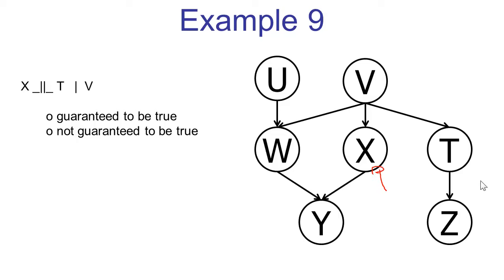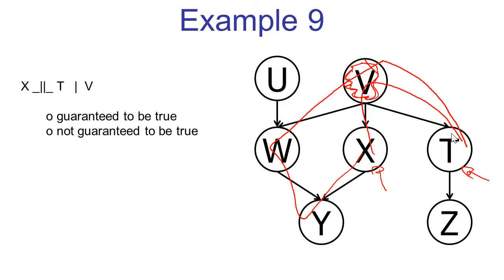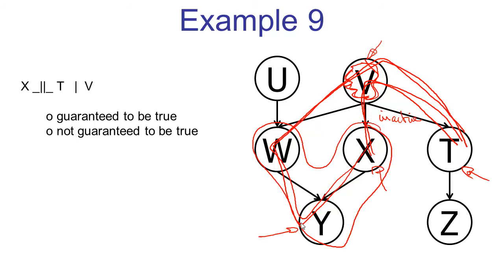We're now asked about x and t, and we have evidence variable v. There are two paths connecting x and t: x, v, t and x, y, w, v, t. Let's first look at x, v, t — it consists of just one triple, which is a common cause with the middle node observed. This means the triple is inactive, so the first path is inactive. Along the second path, we see a v-structure x, y, w — the middle node is unobserved with no descendants, so no observed descendants. This v-structure is inactive, which means the entire path is inactive. Both paths connecting x and t are inactive, so we're guaranteed that x and t are conditionally independent given v.